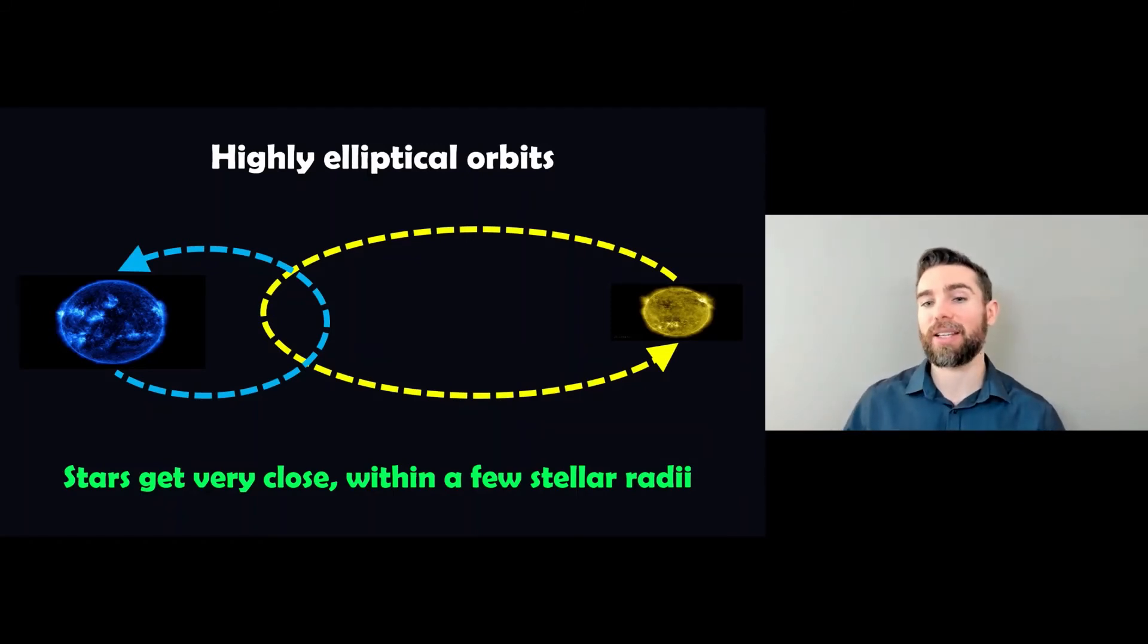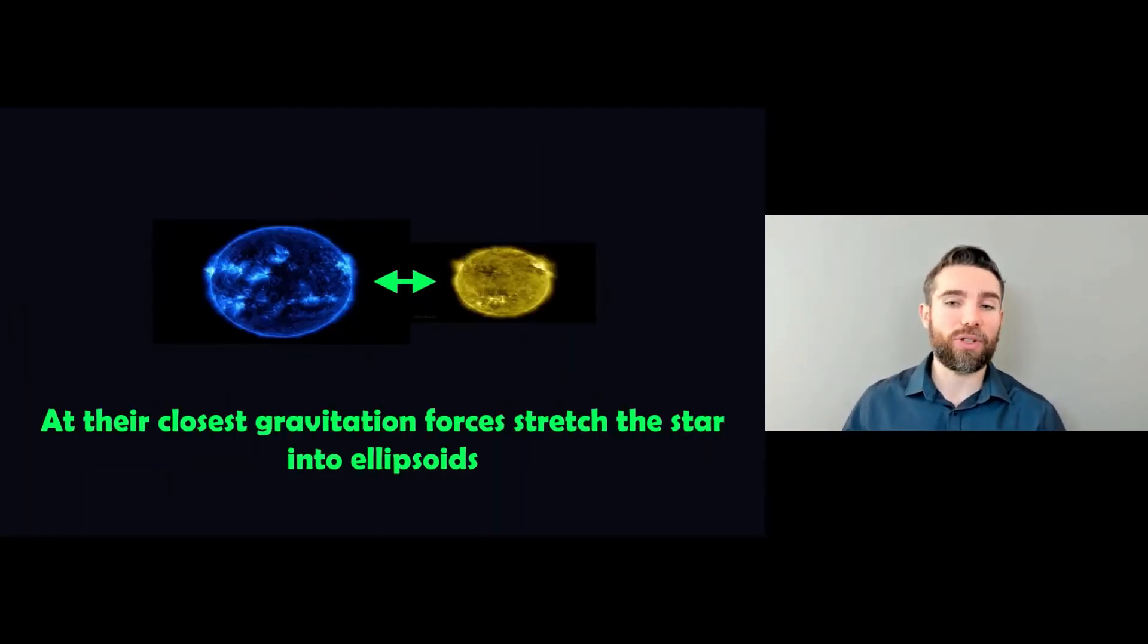Now, a consequence of that is that the gravitational forces exerted on each of them basically stretches them. So the tidal forces there from the gravitational forces stretches them to non-spherical structures or shapes. They're no longer spherical in shape. They become almost ellipsoid in shape. So it's actually a change in shape of the star at that closest point that is starting to contribute to a different light curve we get for these stars.